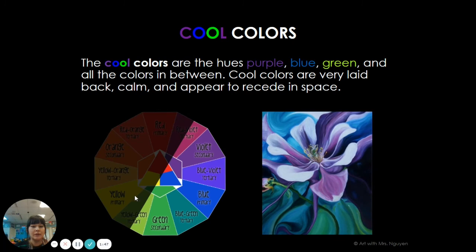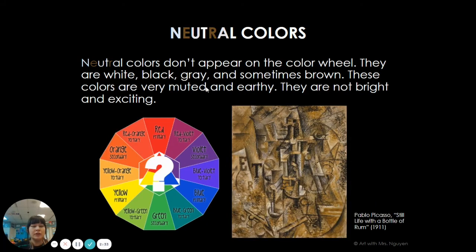On the other side of the color wheel are cool colors. Cool colors are colors that remind us of things that are cold and calm. Violet, blue, and green are the three cool colors, and also everything in between. Neutral colors are colors that are not on the color wheel — they are white, black, gray, brown, and tan. Colors that can be natural hair or skin color are usually called neutral colors.